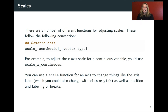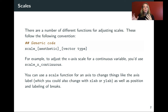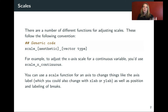There are a number of different functions for adjusting scales, and many of them follow a certain convention. The name of the function has 'scale' and then an underscore, then the name of the aesthetic — like x, y, or color — then another underscore, and then the type of data in the vector, whether it's continuous or discrete like a factor. For example, if we want to make changes to the x-axis for a continuous variable, we can use scale_x_continuous as a layer in our ggplot.